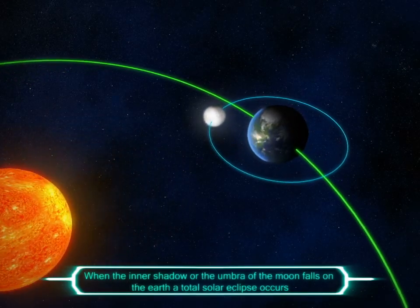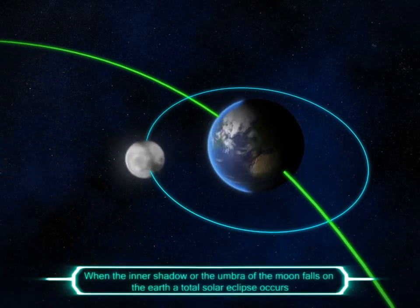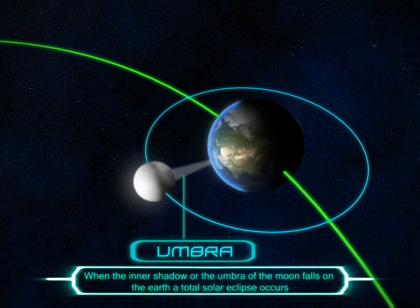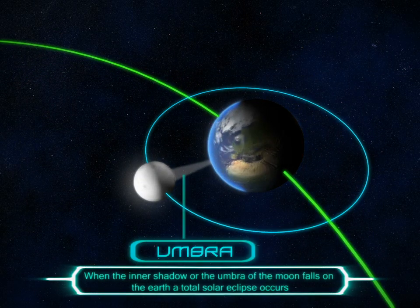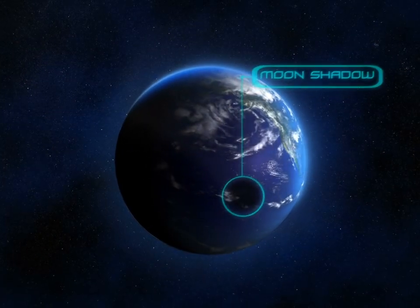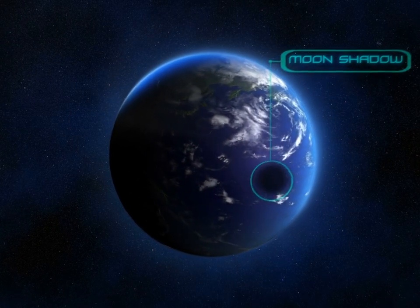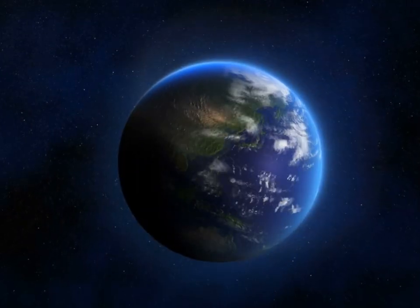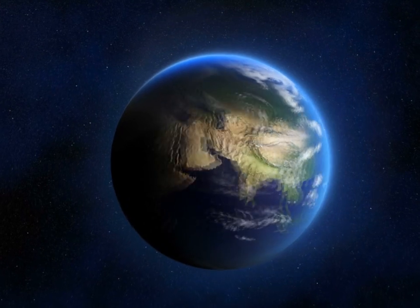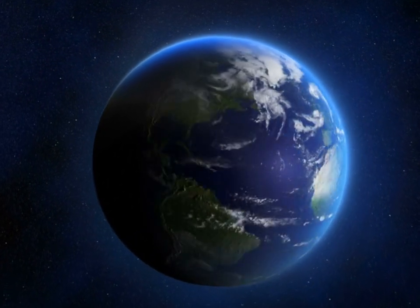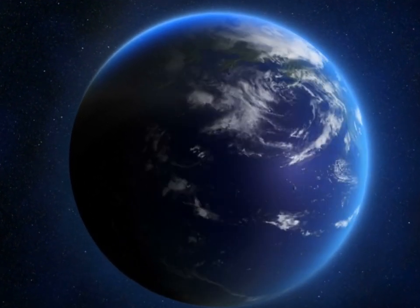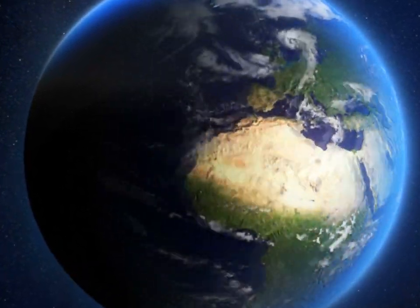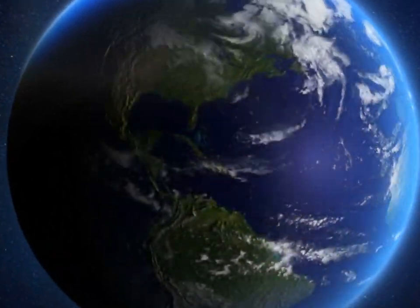When the inner shadow, or the umbra, of the moon falls on the earth, a total solar eclipse occurs. At this time the moon completely blocks the view of the sun. It is only a narrow strip of land that experiences a total eclipse; the rest of the earth will experience a partial eclipse.